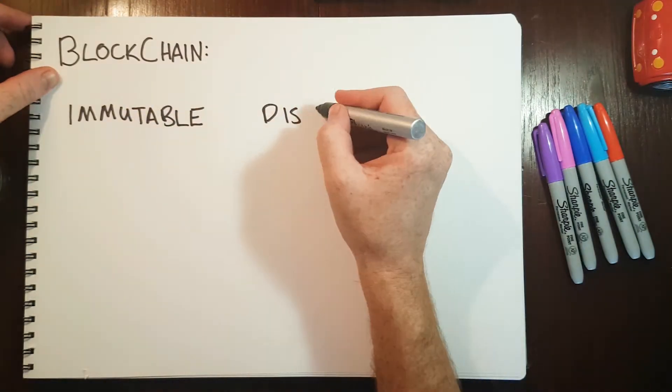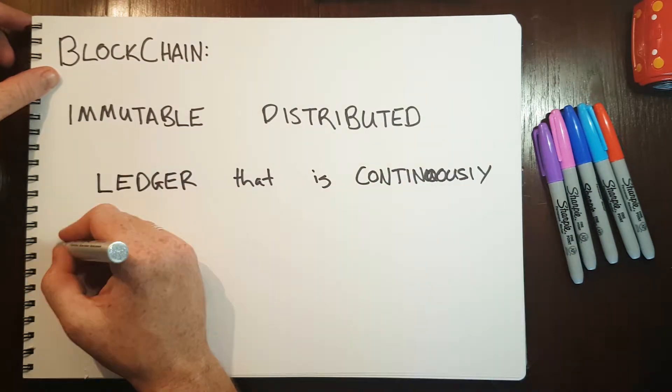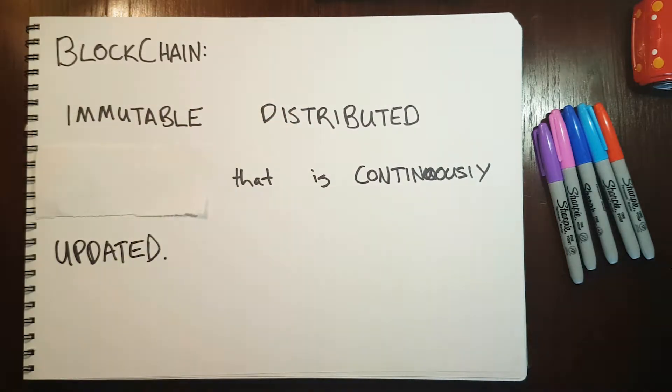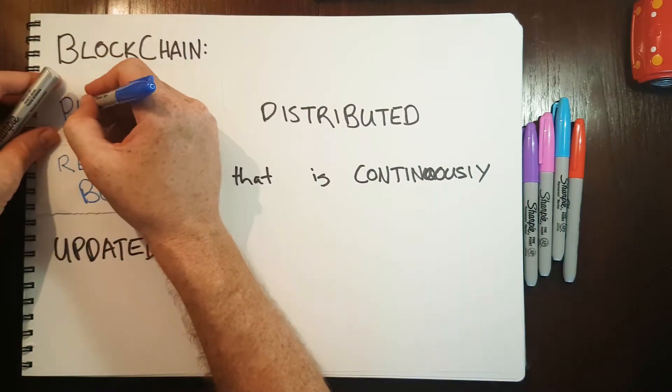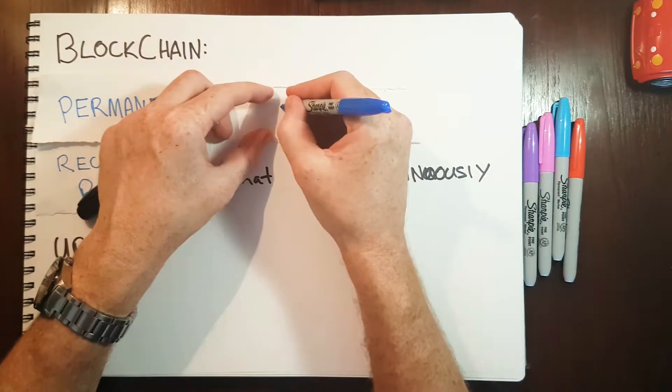While it is accurate to describe blockchain as an immutable distributed ledger that is continuously updated, this jargon is not easy to understand. So let's adjust the language. Rather than ledger let's call it a record book, and rather than immutable we'll say permanent, and rather than distributed let's use the word shared.